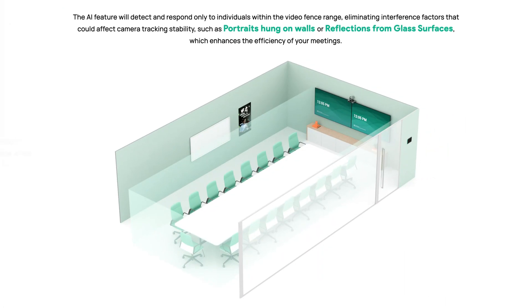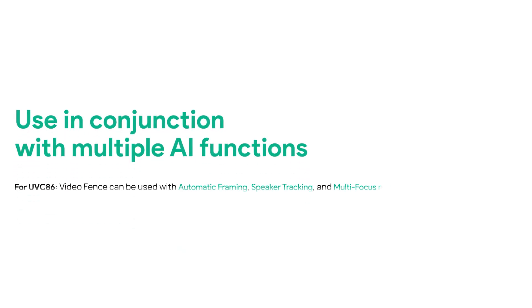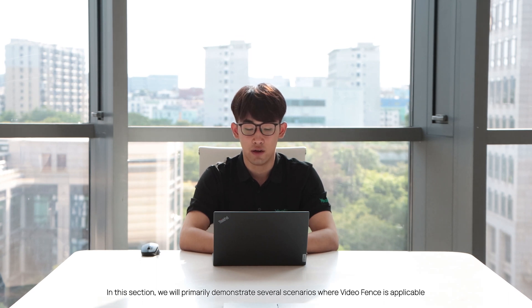The AI feature will detect and respond only to individuals within the video fence range, eliminating interference factors that could affect camera tracking stability, such as portraits hung on walls or reflections from glass surfaces, which enhances the efficiency of your meetings. Meanwhile, video fence can be used in conjunction with multiple AI functions. In this section, we will primarily demonstrate several scenarios where the video fence is applicable.